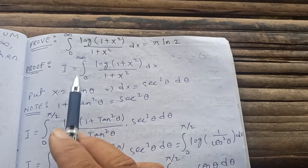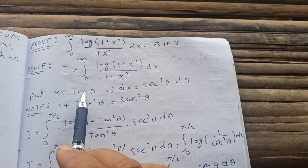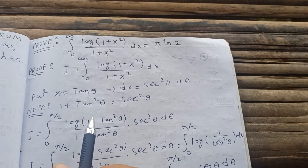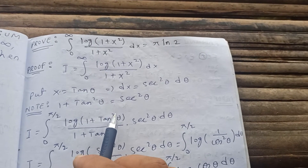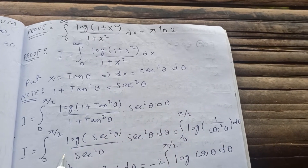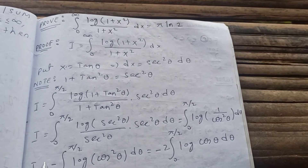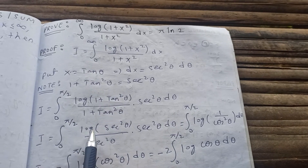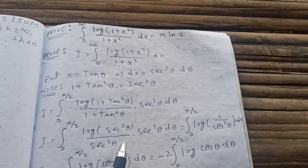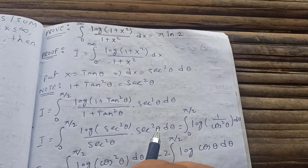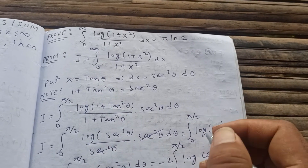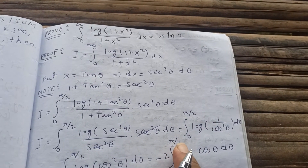Substituting: when x is 0, θ is 0; when x is infinity, θ is π/2. So we get I = integral from 0 to π/2 of log(1 + tan²θ) / (1 + tan²θ) times sec²θ dθ. Since 1 + tan²θ = sec²θ, this becomes the integral from 0 to π/2 of log(sec²θ) / sec²θ times sec²θ dθ, and the sec²θ terms cancel.